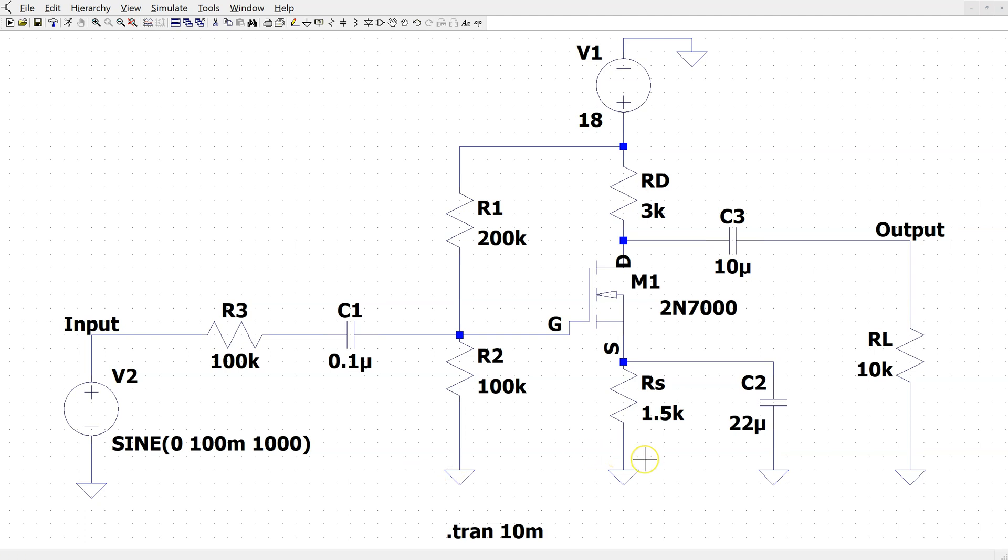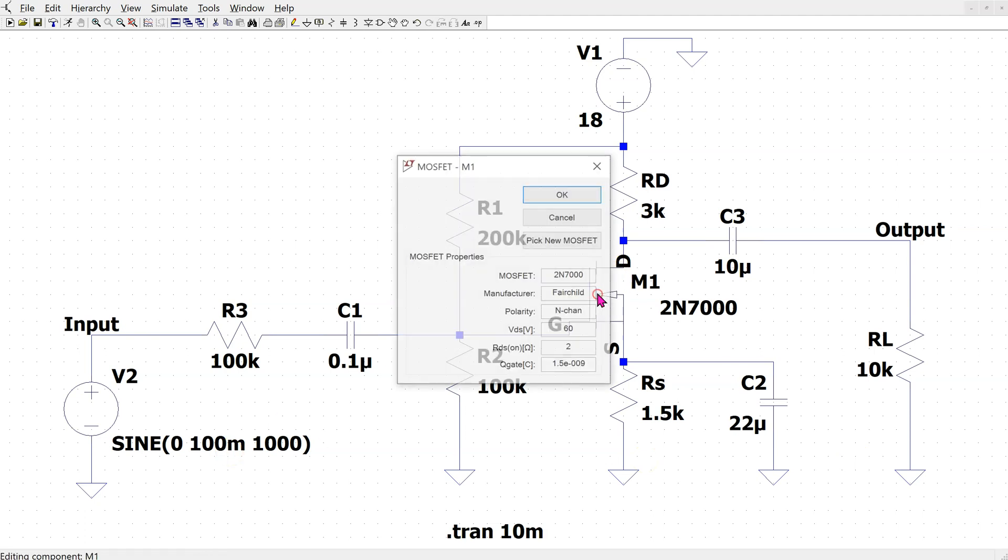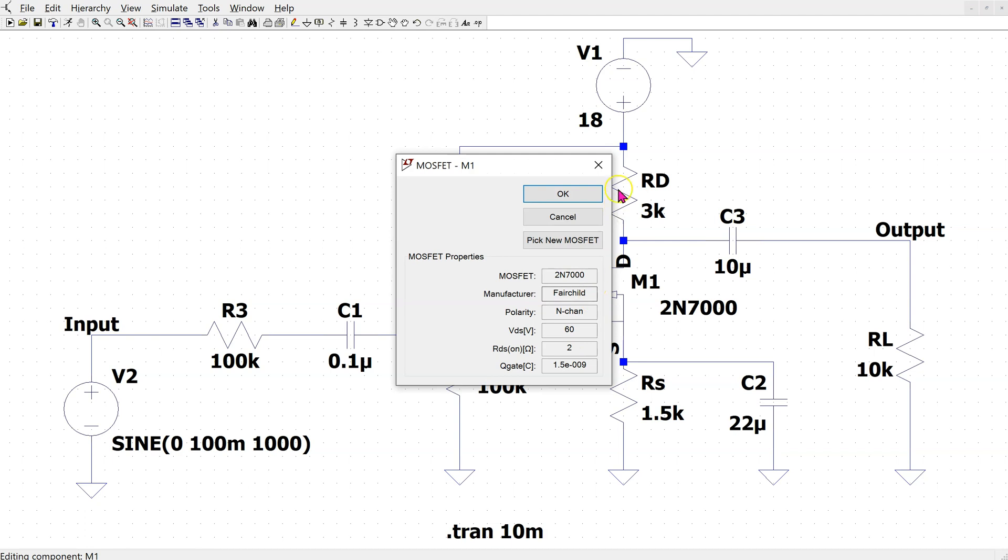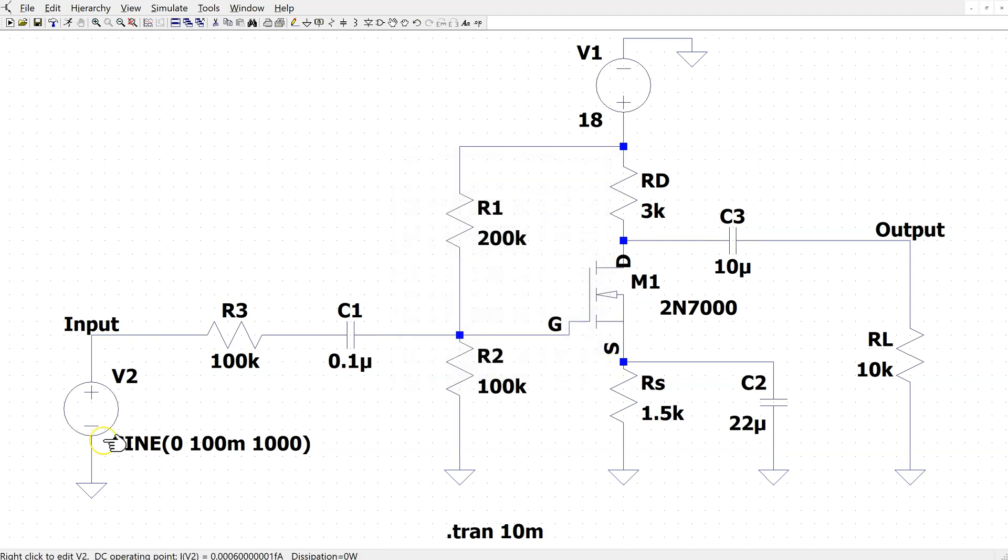This is a complete common source MOSFET amplifier in LTSPICE. We are using the 2N7000 MOSFET model. The input is a 0.1 volt peak 1 kilohertz sine wave, and we are running a transient simulation.